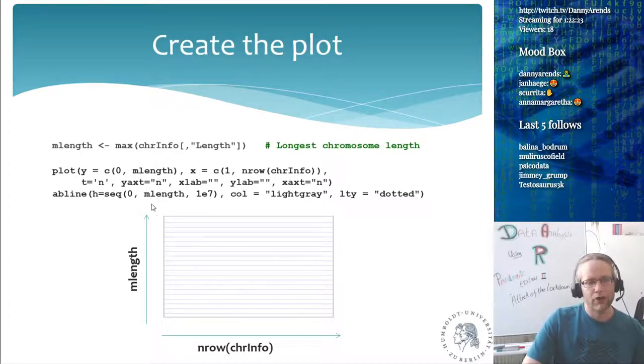I'm going to say that don't plot a y-axis, don't put anything on the x-label, don't put any y-label here, and don't put any x-axis there as well, because I am going to do the axis. So the first thing that I'm going to do is just say I want to have some lines in the background so that I kind of can see where, like, 10 megabases is. So I'm saying here, use a sequence from 0 to the maximum length of the chromosome and step per 10 million every time. And then the color of these is light gray and they are dotted so they look a little bit more fancy.